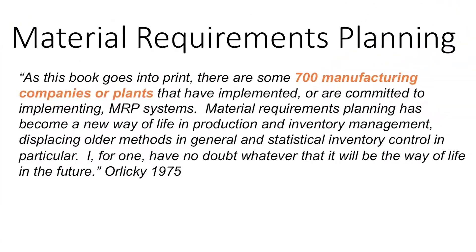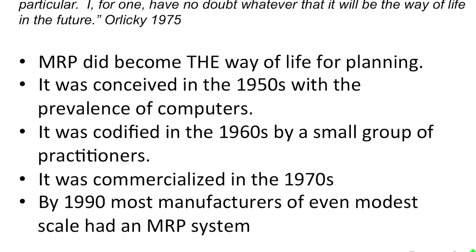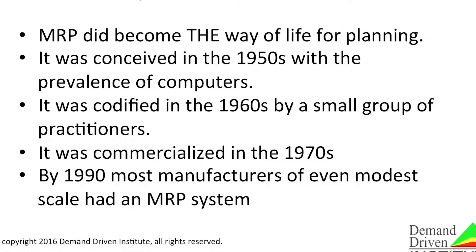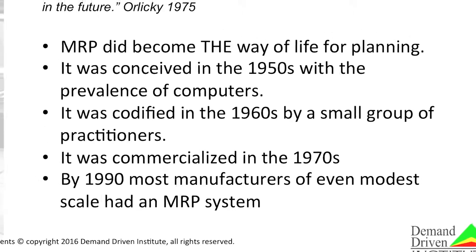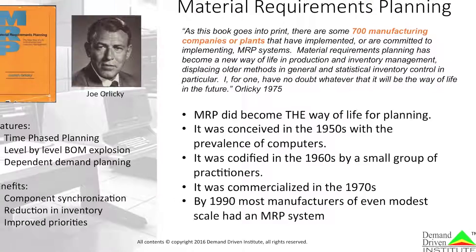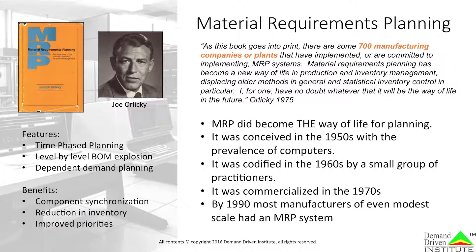In 1975, only 700 instances of MRP existed in the world. With the release of Orlicky's book and others like it, MRP quickly proliferated throughout the world and became the way of life for planning. MRP was conceived in the 1950s, codified in the 1960s, and commercialized in the 1970s, and by 1990 most manufacturers had it. Today, almost every supply chain is dominated by MRP systems conveying signals up and down the chain to each other.